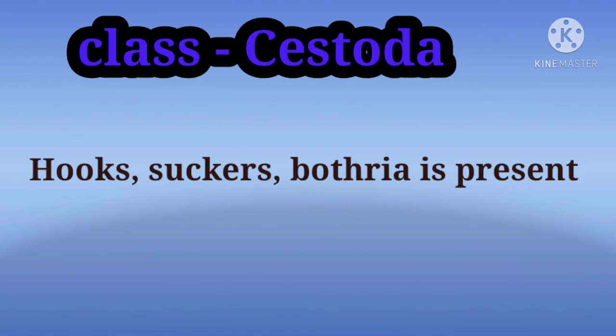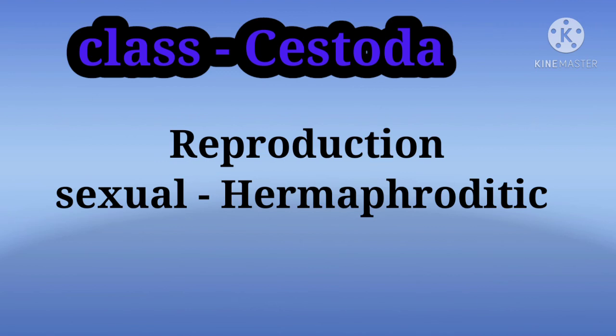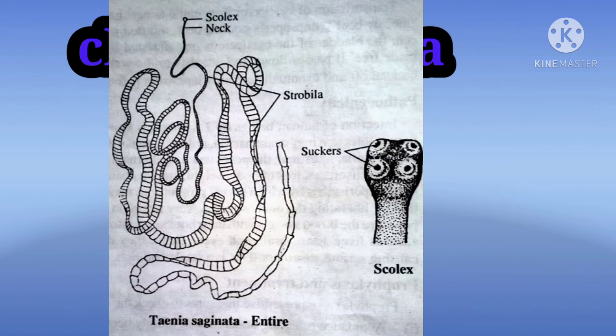The excretory and osmoregulatory organs are protonephridia with flame cells. Reproduction is sexual and they are hermaphrodite. An example of Class Cestoda is Taenia, commonly called the Beef Tapeworm. It is an intestinal endoparasite in human beings.